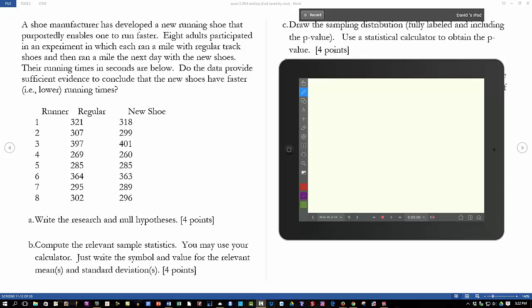And then with the new shoes, it took slightly less time to run the mile, three seconds less to be exact. Well, it's that three seconds, that difference, which is really the variable in this case. That's our x or our d.